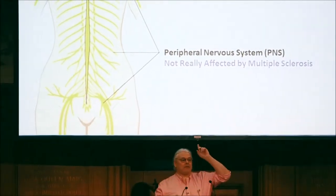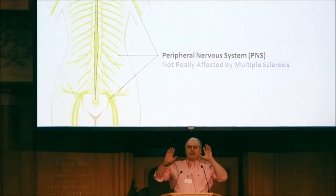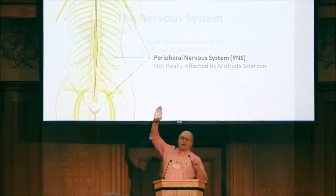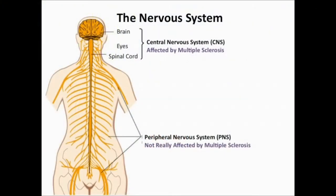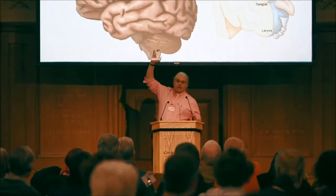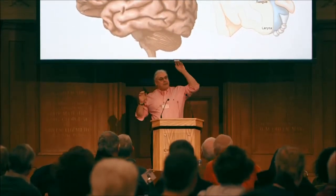In terms of the nervous system we can divide it into two parts: the brain, the eye, and the spinal cord, which make up the central nervous system and which is affected by multiple sclerosis; and then the nerves feeding off the brain and spinal cord, called the peripheral nervous system, which are not really affected by multiple sclerosis.